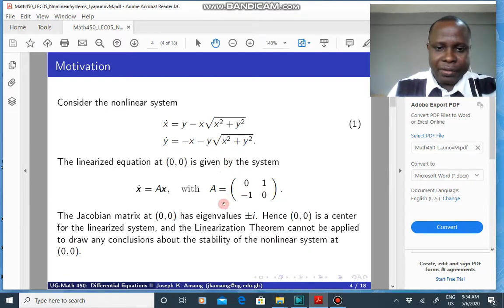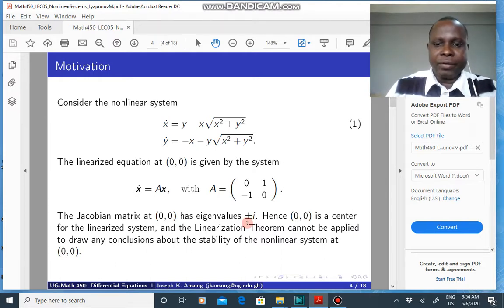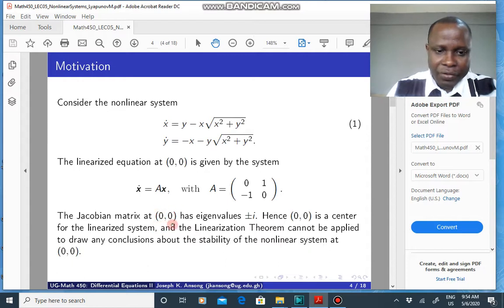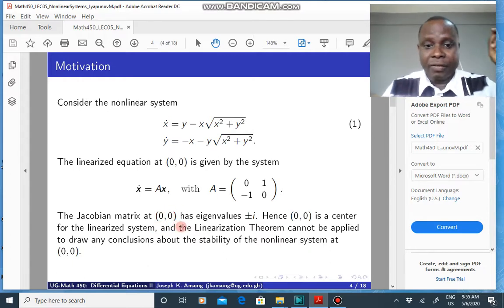And, of course, you can easily find the eigenvalues of this. And what you see is that the eigenvalues are plus or minus i. So this has purely imaginary eigenvalues, which means that if we wanted to use the linearization theorem to draw any conclusions about the stability of 0,0, we couldn't do it because the theorem didn't cover that.